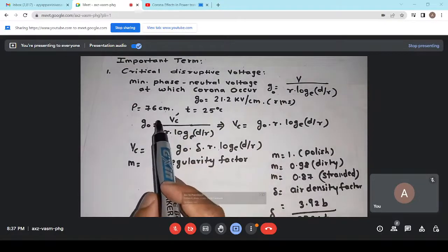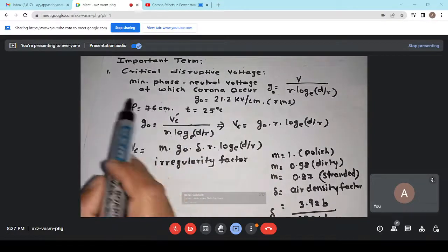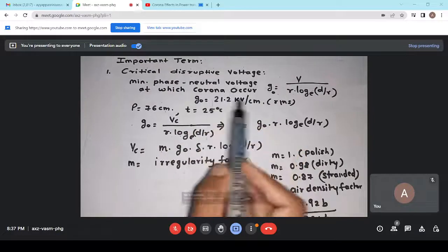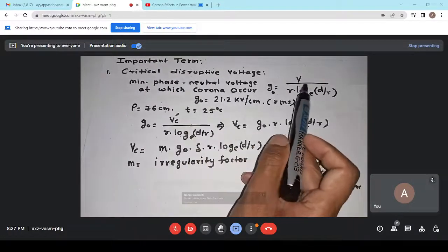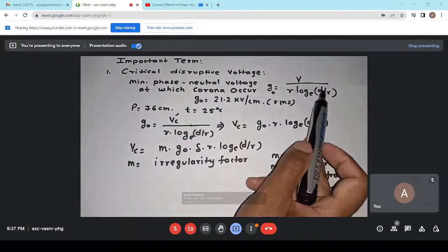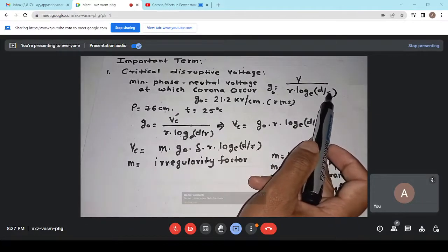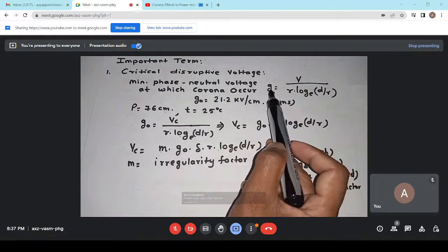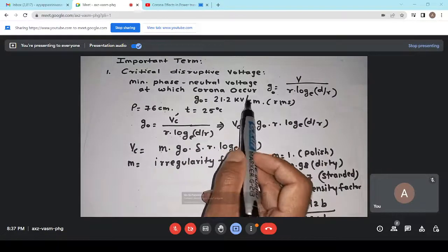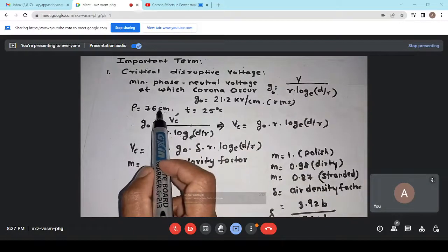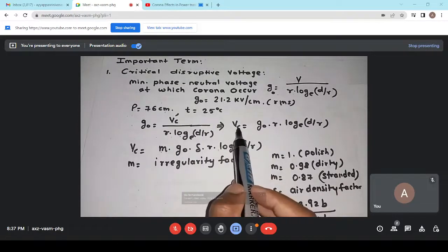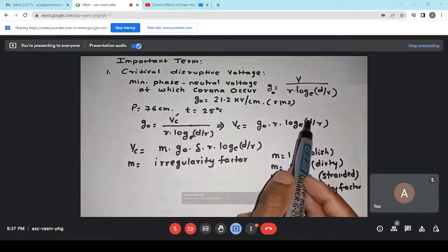The first one is critical disruptive voltage. Definition of critical disruptive voltage is that minimum phase neutral voltage at which corona is occur is called critical disruptive voltage. We know this expression. Potential gradient is equal to voltage divided by R into logarithm E D by R, where D is the spacing between the conductor and R is the radius and G is the gradient and V is the voltage. We know that the G0 is equal to 21.2 kilovolt per centimeter in RMS value and pressure is 76 centimeter and temperature is 25 degree centigrade. Then we can find out here the critical disruptive voltage is equal to G0 into R log E D by R.